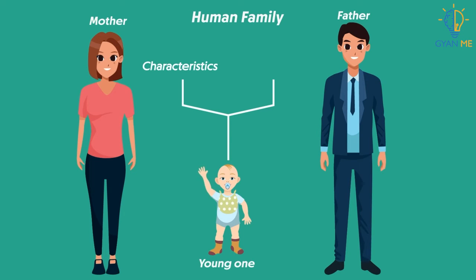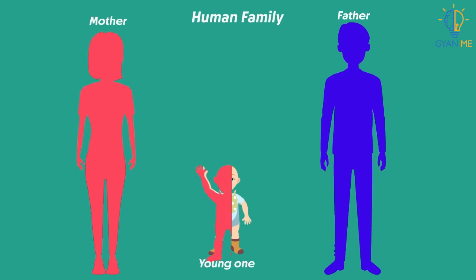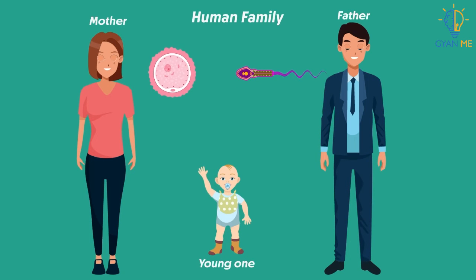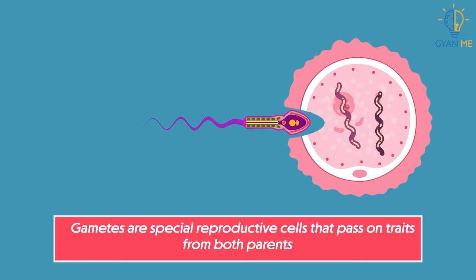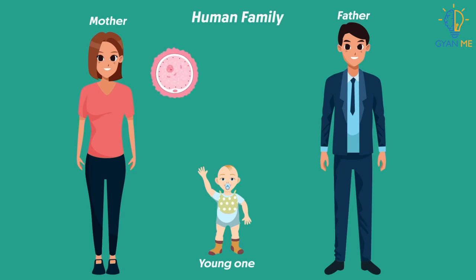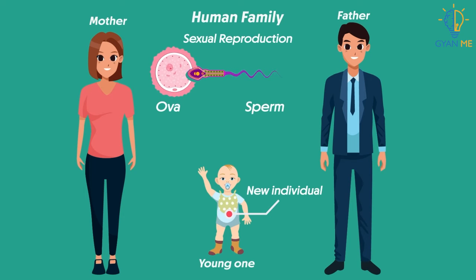Now observe these pictures of monkeys — offspring show some variations from both parents. Half of the traits are inherited from the mother and half from the father. They do that with the help of gametes. Gametes are special reproductive cells that pass on traits from both parents. The mother produces a female gamete — the ovum — and the father produces a male gamete — the sperm. The fusion of both these gametes leads to the production of a new individual. This kind of reproduction is called sexual reproduction, and during the process, along with parental characteristics, variations are also passed on to the child.